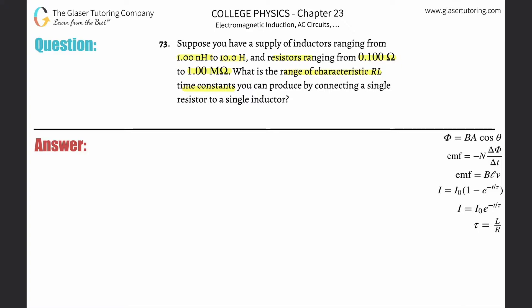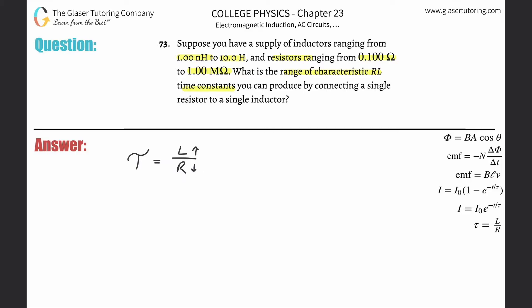The time constant formula is equal to the inductance divided by the resistance. In order to maximize the time constant, you have to maximize the size of the numerator and minimize the size of the denominator. If you take a very large numerator and divide it by a very small denominator, the whole fraction becomes quite large.